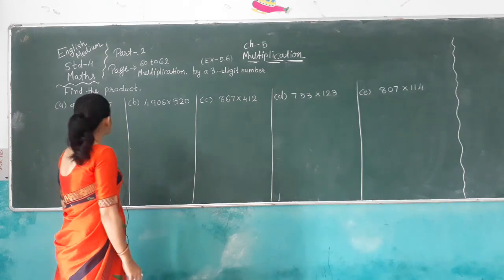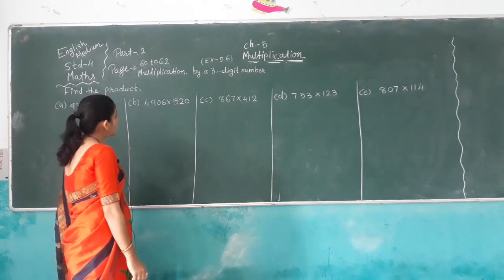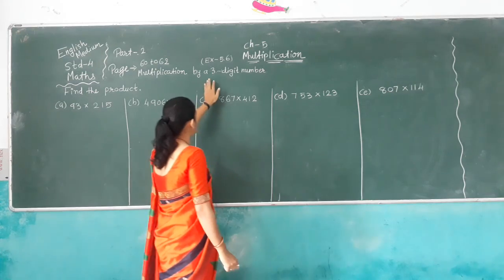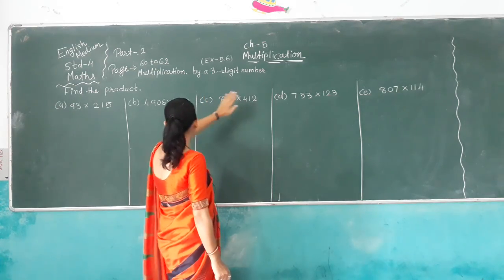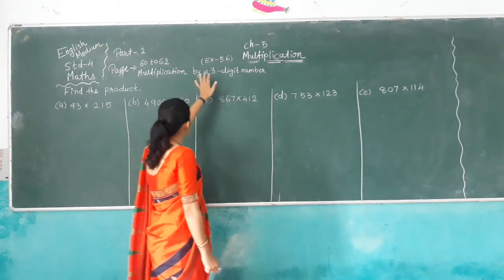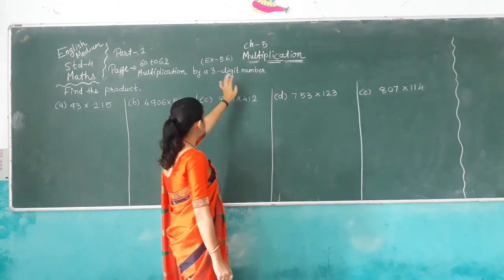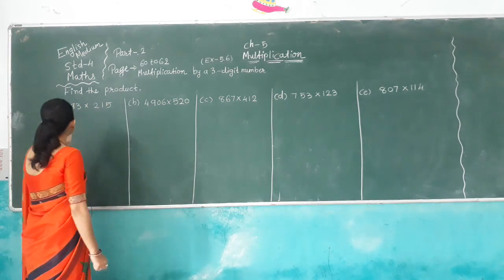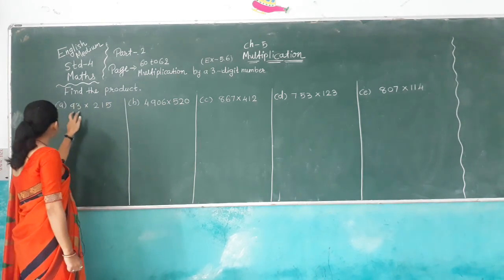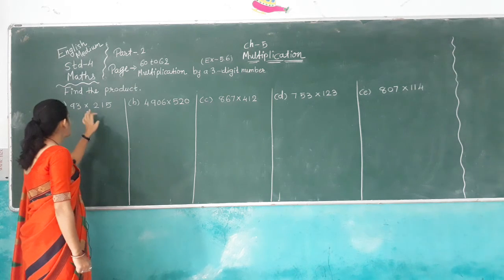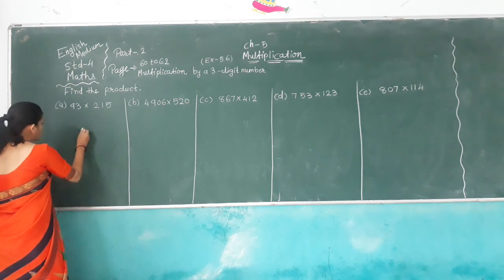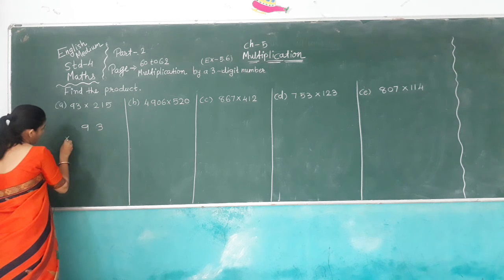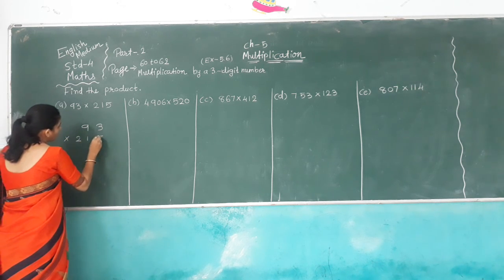Now next exercise, exercise number 5.6: Multiplication by 3-digit number. First one, find the product. Here we have a 2-digit number multiplied by a 3-digit number. So, 93 multiplied by 2,150.